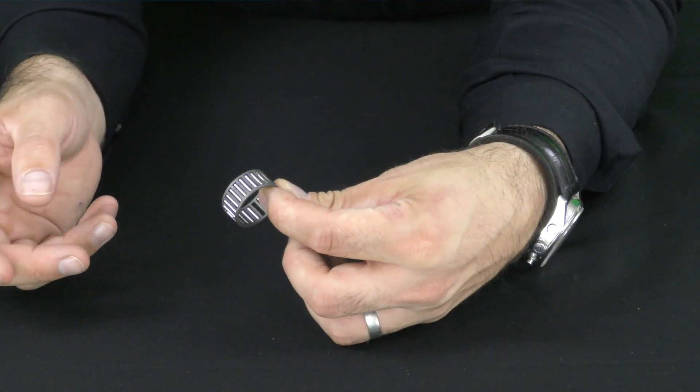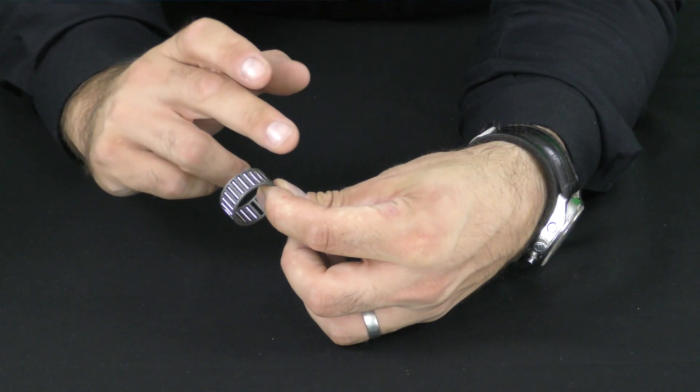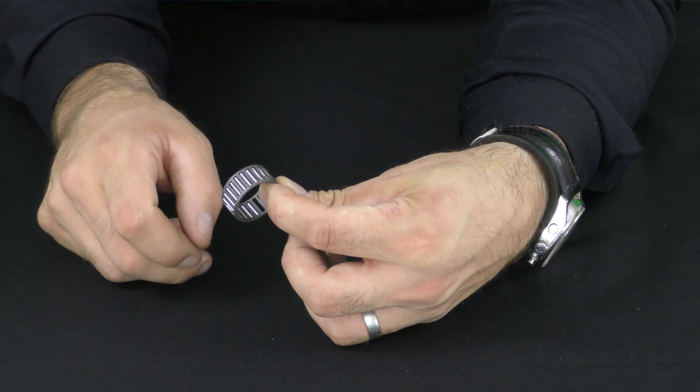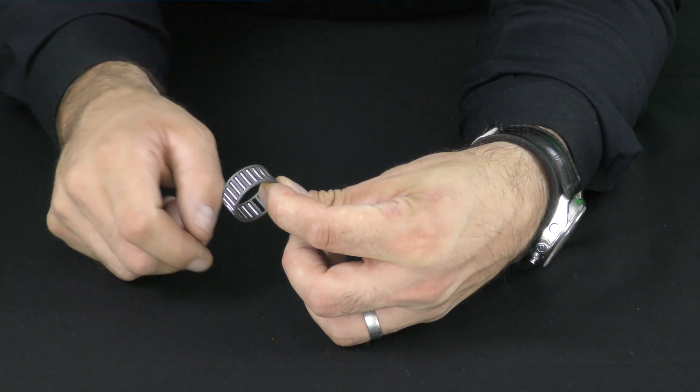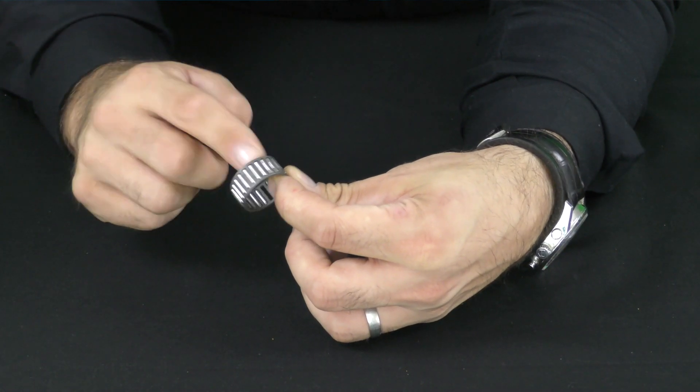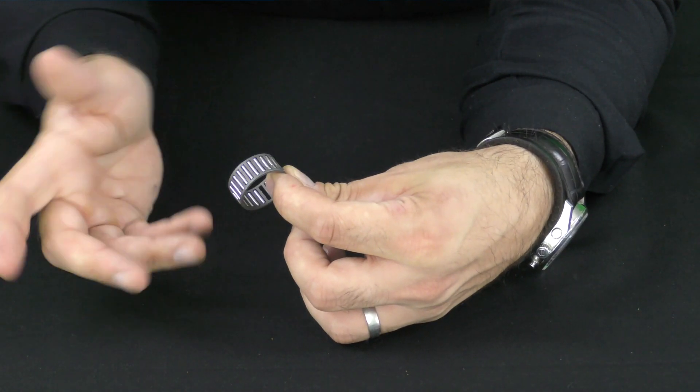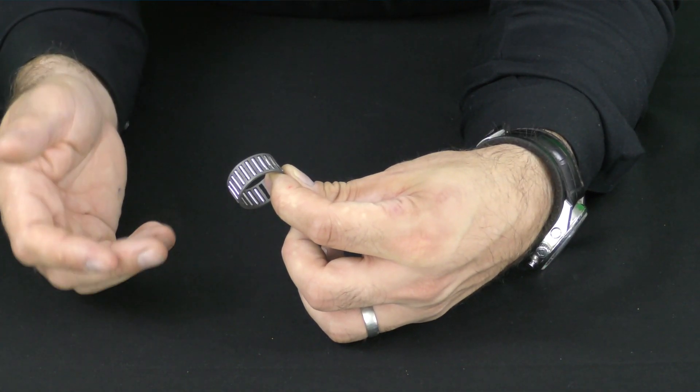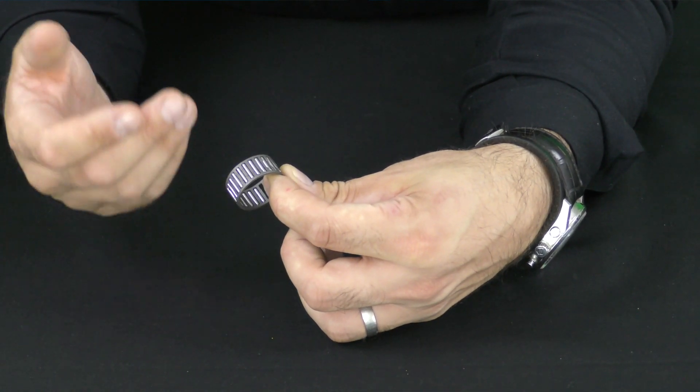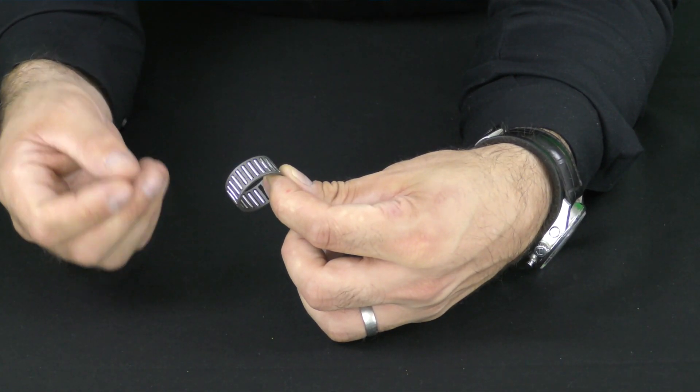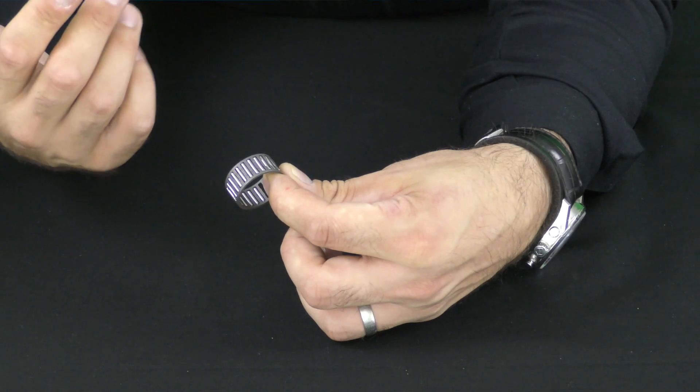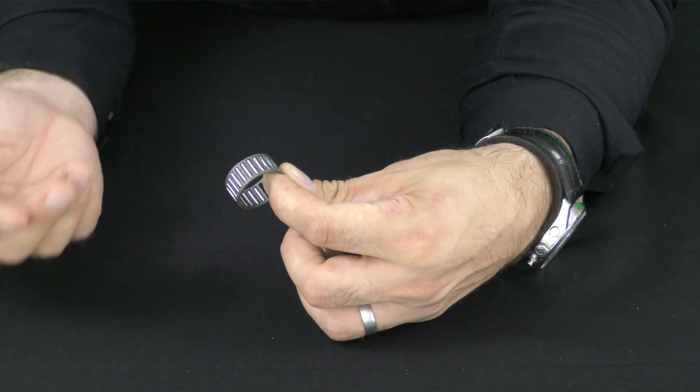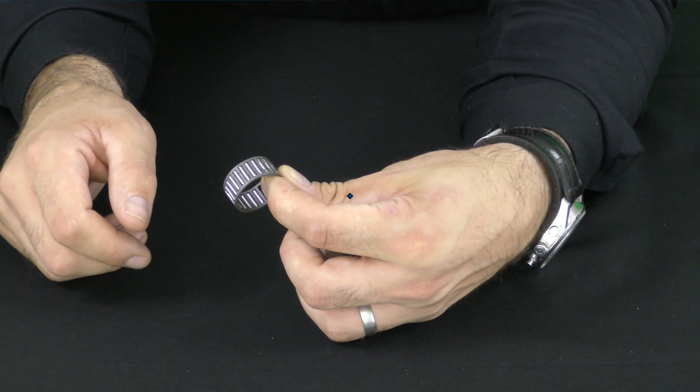For this type of needle roller bearing, you can see that there is no outer raceway for it to run on and it will actually require you to machine the housing and the shaft that it needs to run on to the required raceway specification. We can provide that information for you. If you need information on how to create the right raceway and quality, please leave a comment below or contact us directly.